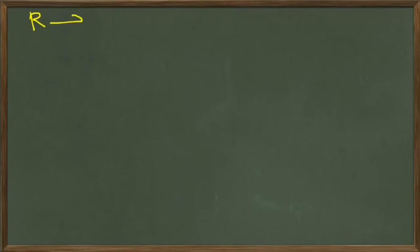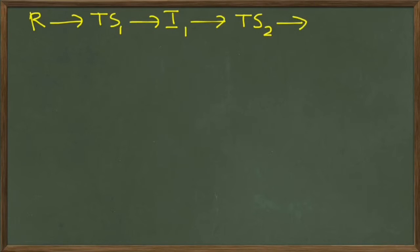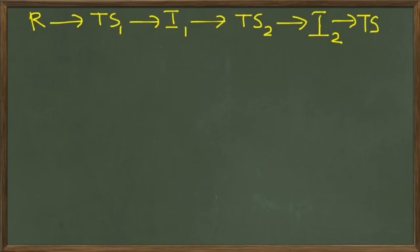Let's take one more example. We have a reactant which changes to the first transition state. This intermediate changes to a second transition state, which before changing to a product changes into another intermediate. We have a second intermediate which changes to another transition state, and then finally we get the product.